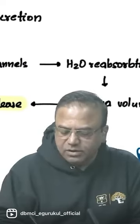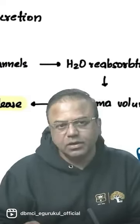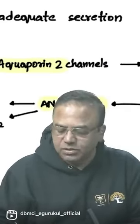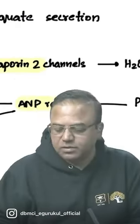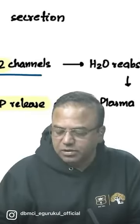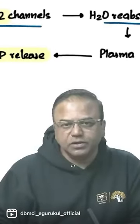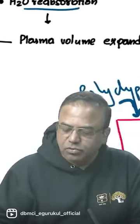Anti-diuretic hormone is increased — we're talking about SIADH. In a patient with SIADH, anti-diuretic hormone acting on the V2 receptors is going to open the aquaporin-2 channels, causing water retention.